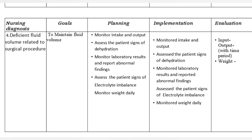Nursing diagnosis 4: Deficient fluid volume related to surgical procedure. Goal: To maintain fluid volume. Planning and Implementation: Monitor intake and output. Assess the patient for signs of dehydration. Monitor laboratory results and report abnormal findings. Assess the patient for signs of electrolyte imbalance. Monitor weight daily.